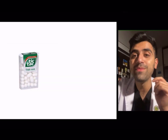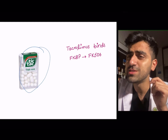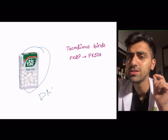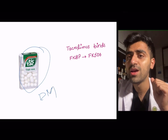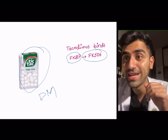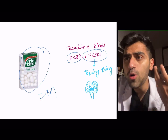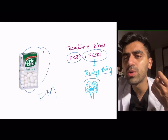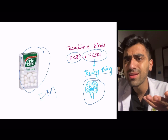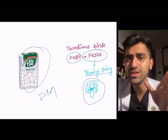To remember tacrolimus: think of Tic Tacs. Tic Tacs are sweet and can give you diabetes mellitus — that's why tacrolimus causes diabetes mellitus. And tacrolimus is the 'brainy' drug binding FK506; the 'gunner' smart people in medical school get neurotoxicity from all that toxic stuff in their brain.